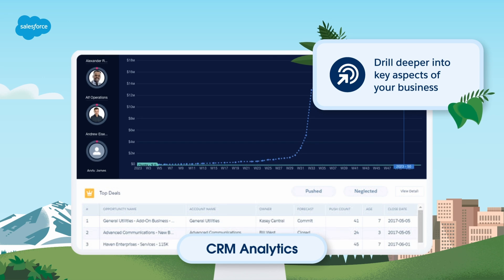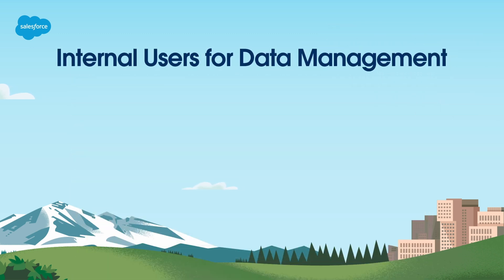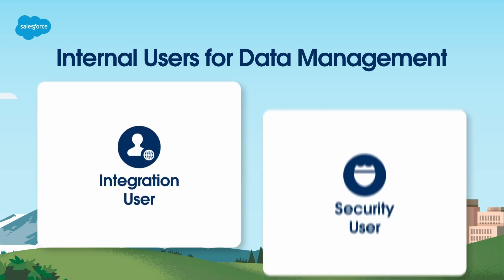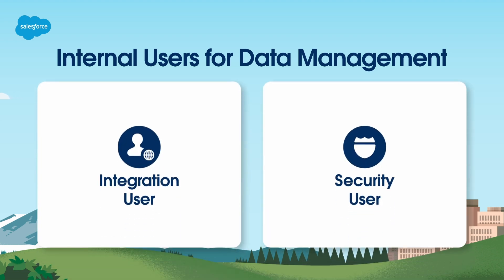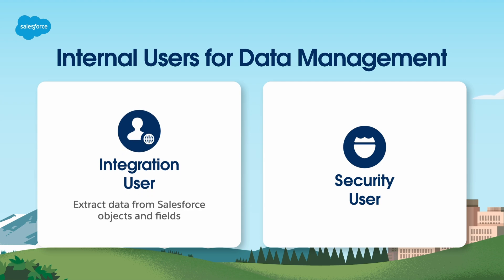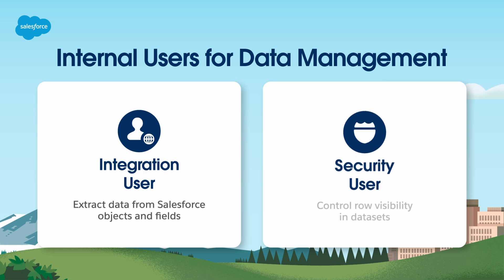And you can drill deeper into key aspects of your business by customizing sales analytics around your business needs. Before we walk through the steps to set up sales analytics, note that when sales analytics is enabled, an integration user and security user are generated, along with associated licenses and profiles. These users are vital to the functionality of analytics. The permissions of the integration user are used to extract data from Salesforce objects and fields when a data flow job runs, and the security user impacts sharing and security functionality to control row visibility in datasets.